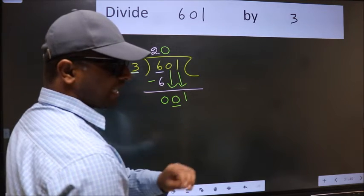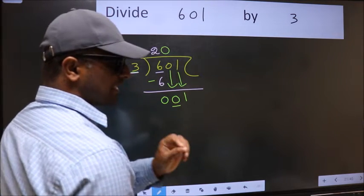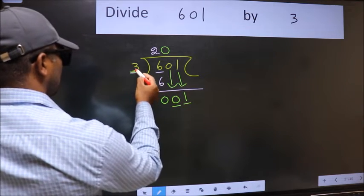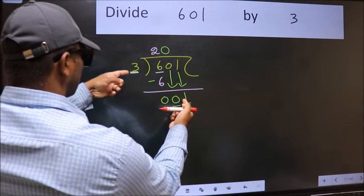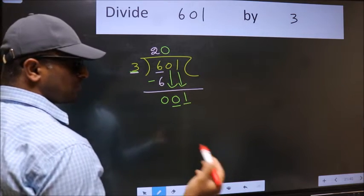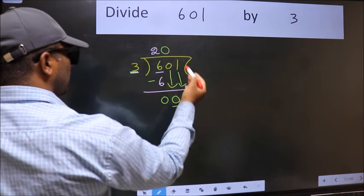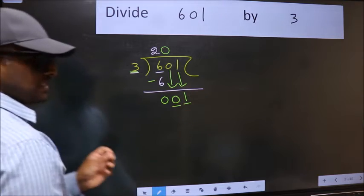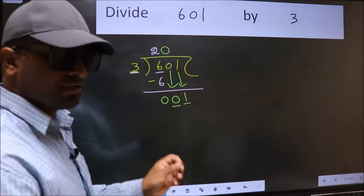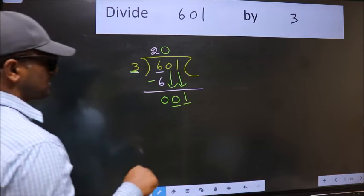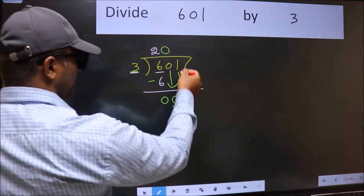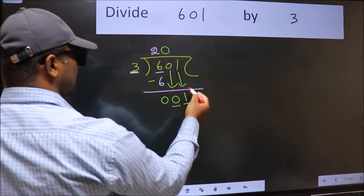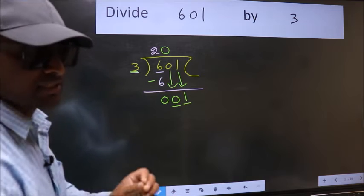After this step, the mistake happens. And the mistake is this: here we have 1 and here 3. 1 is smaller than 3. So what many do is they directly put dot and take 0, which is wrong. Why is it wrong? Because just now you brought this number down, and in the same step you want to put dot and take 0, which is wrong.